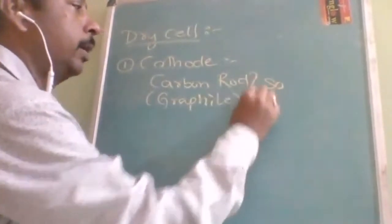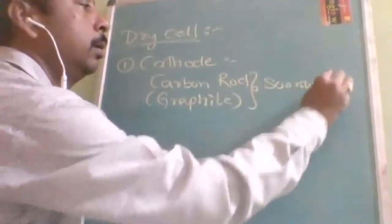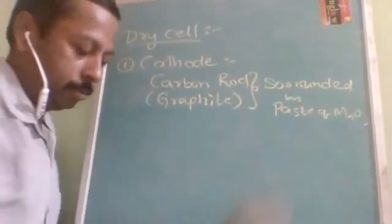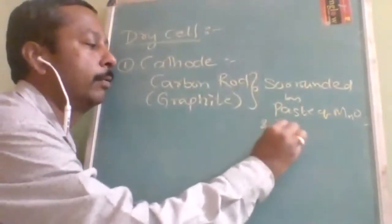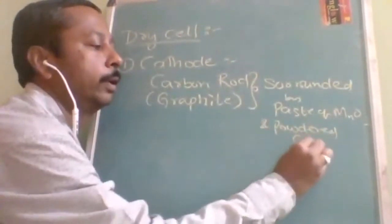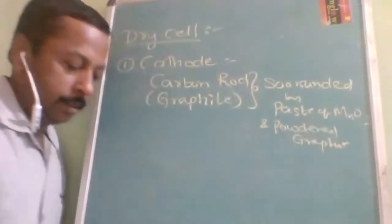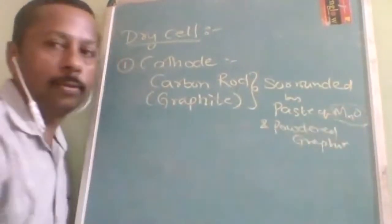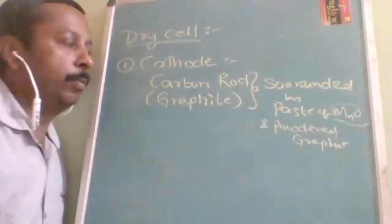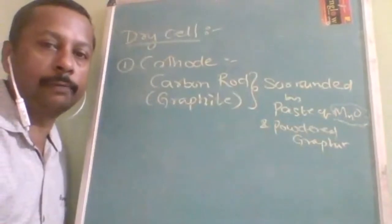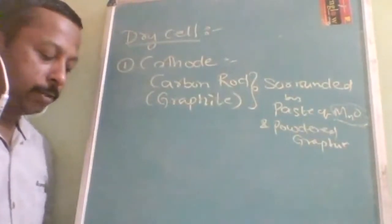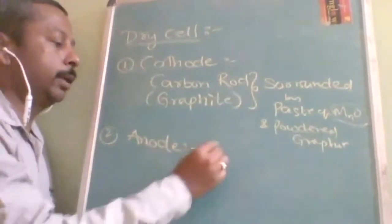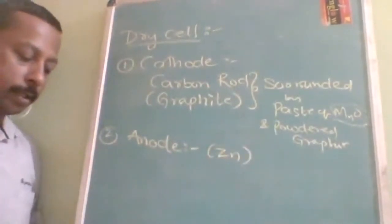The cathode is made up of a carbon graphite rod, but the reactive part is MnO2. The graphite is an inert electrode — it will not participate in the reaction. Coming to the anode, it is zinc metal. The zinc rod acts as the anode and being the anode, it should undergo oxidation.